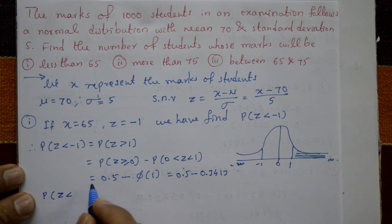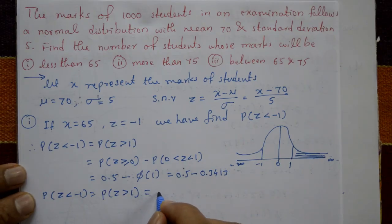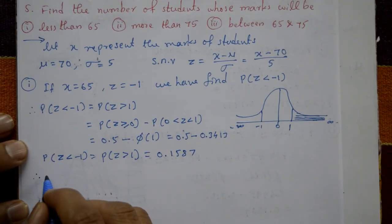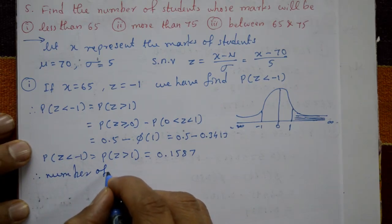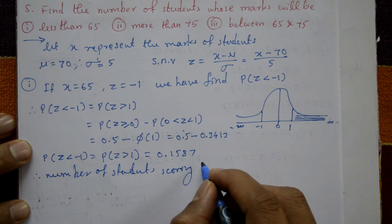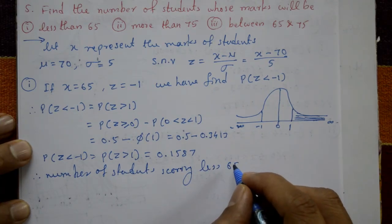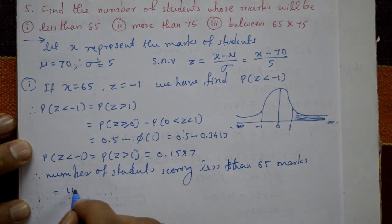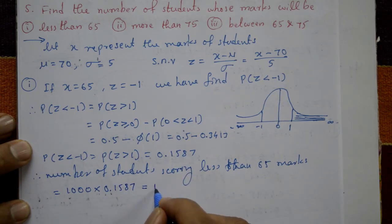Therefore P(Z < −1) = P(Z > 1) = 0.5 − 0.3413 = 0.1587. The number of students scoring less than 65 marks is 1000 × 0.1587 = 158.7, approximately 159 students.